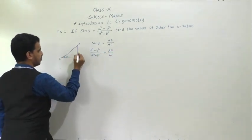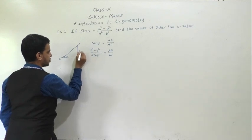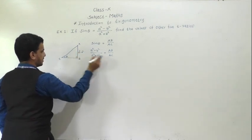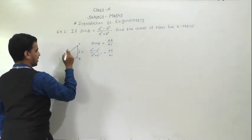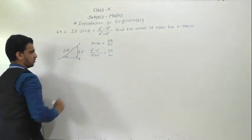The value of sin θ is given as (a² - b²) / (a² + b²), which equals AB / AC. So AB equals a² - b², and AC, that is the hypotenuse, equals a² + b².